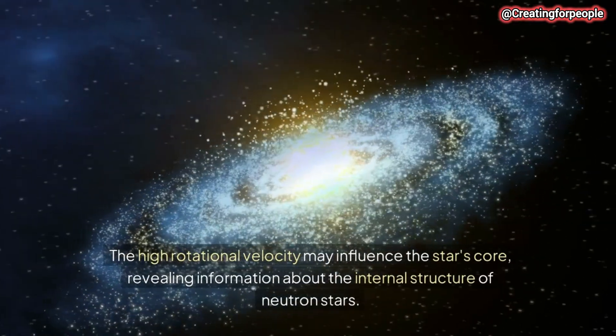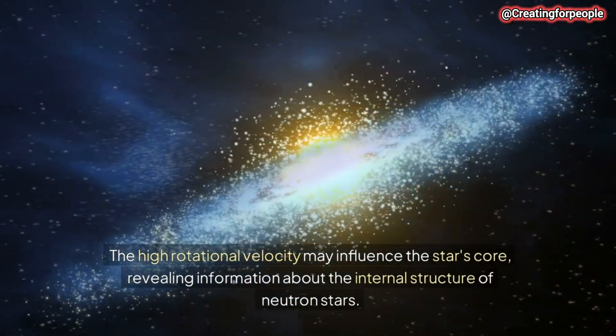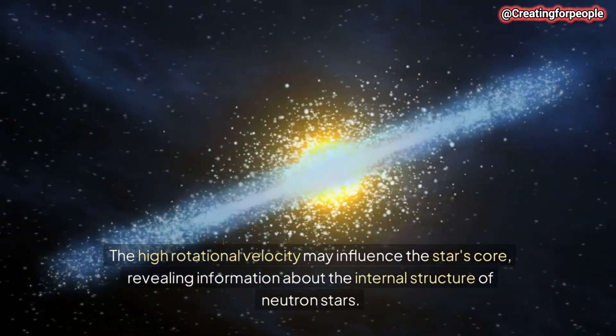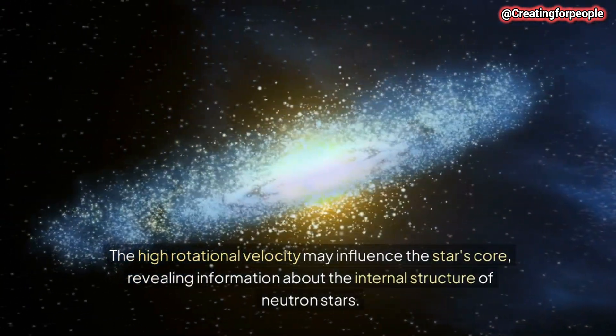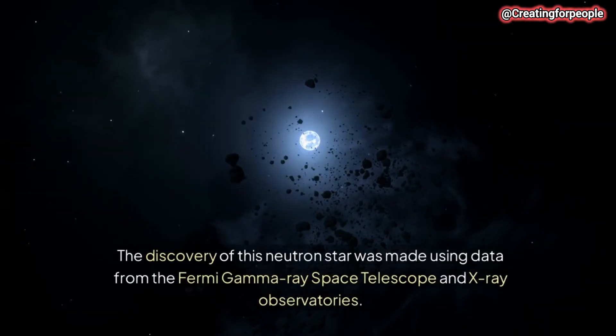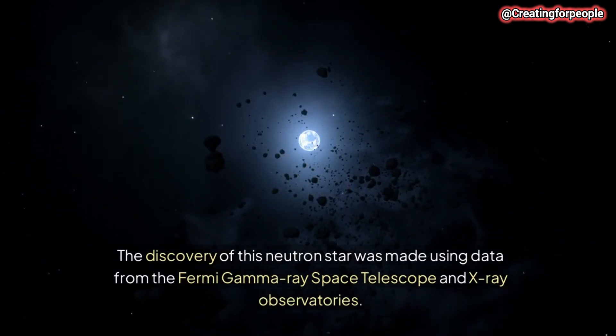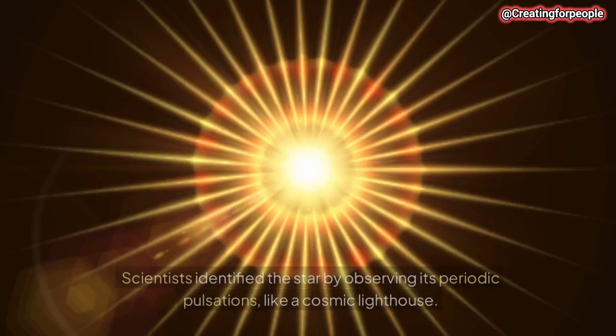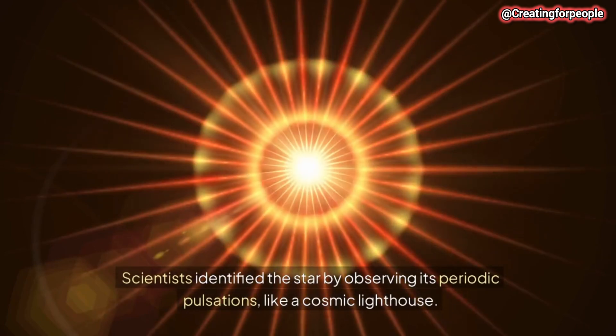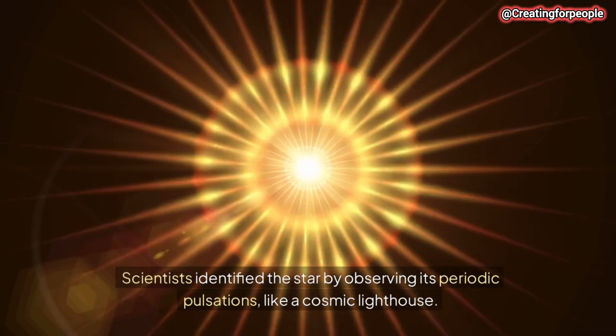The high rotational velocity may influence the star's core, revealing information about the internal structure of neutron stars. The discovery of this neutron star was made using data from the Fermi Gamma Ray Space Telescope and X-ray Observatories. Scientists identified the star by observing its periodic pulsations, like a cosmic lighthouse.